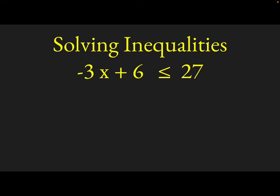Let's look at one more case here. What we want to do is see what happens if we have an inequality that looks like this: negative 3x plus 6 is less than or equal to 27.